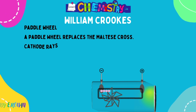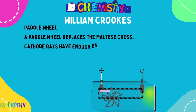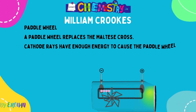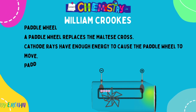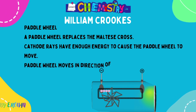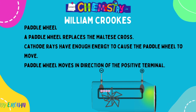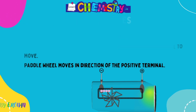Next, Crookes replaced the Maltese cross with a paddle wheel and saw that the paddle wheel moved in the direction of the anode. This showed that cathode rays have enough energy to cause the paddle wheel to move, and they move in the direction of the positive terminal — towards the anode.